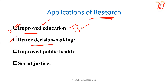Better decision making. Research helps many persons, many industries, and many organizations to be well-informed, and with the help of that information, any decision can be taken in the best manner. So research definitely helps for better decision making.